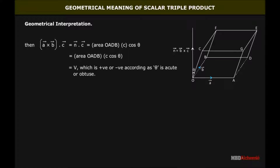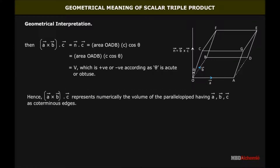That is equal to volume V, which is positive or negative according as theta is acute or obtuse. Hence, vector A cross vector B dot vector C represents numerically the volume of the parallelopiped having vectors A, vector B, vector C as coterminous edges.